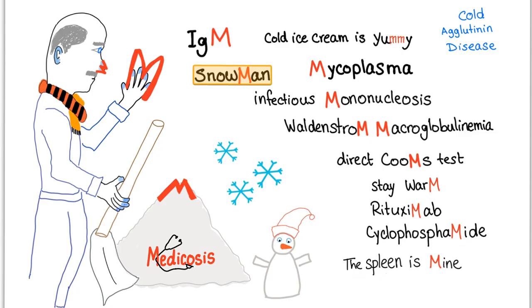Should we remove the spleen of the patient? No — this is cold agglutinin disease, so splenectomy is not indicated. If this were warm autoimmune hemolytic anemia, however, yes, you can remove the spleen as a last resort.